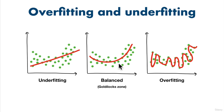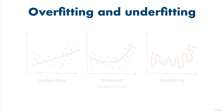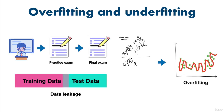Where exactly this Goldilocks zone is — like a balanced model — will really depend on your data and the problem you're trying to solve. It's an iterative process, finding this balanced zone. After some experience and practice working on different machine learning problems, you'll be able to start to tell whether your model is overfitting or underfitting. There are several reasons why underfitting and overfitting can happen, but the main ones are data leakage and data mismatch.